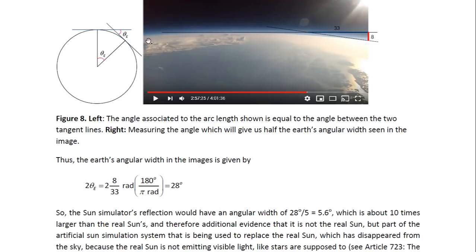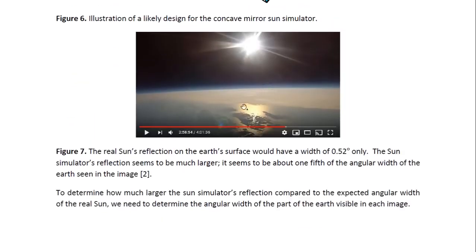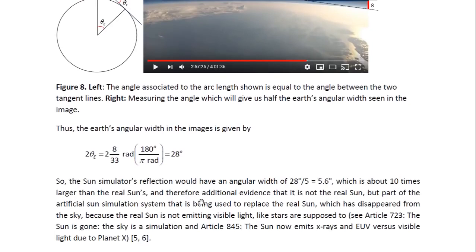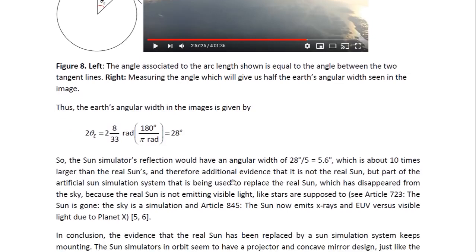So the Earth's angular width from here to there is about 28 degrees. And so the Sun simulator was about a fifth of that. So divided by 5, we get 5.6 degrees. And that's at least 10 times larger than the real Sun's angular width.